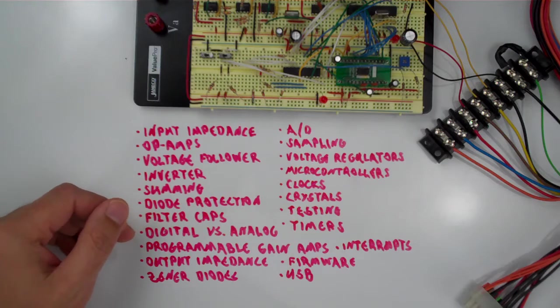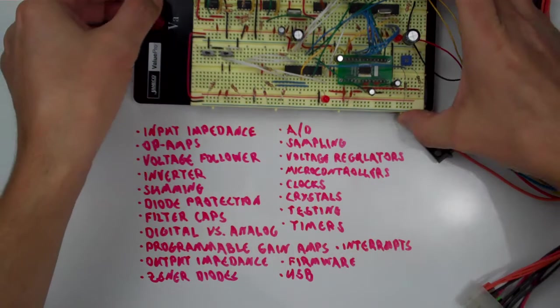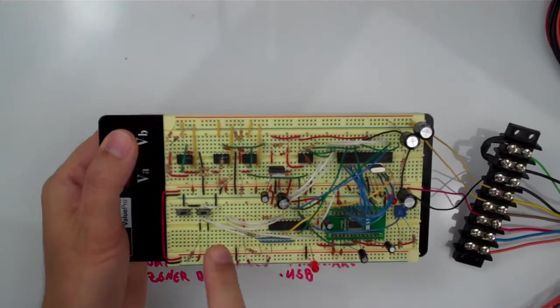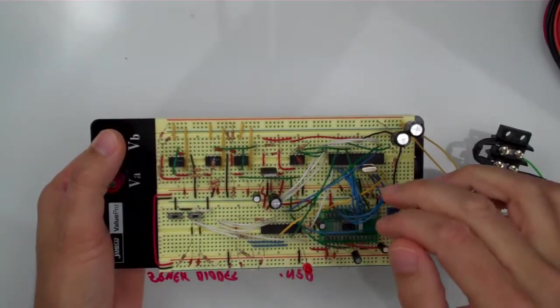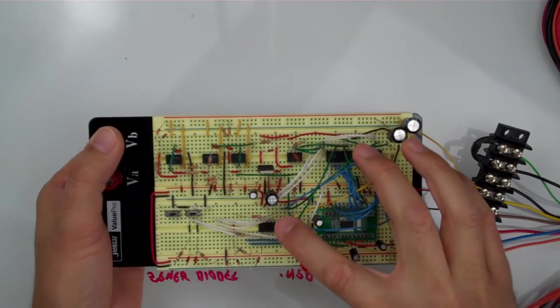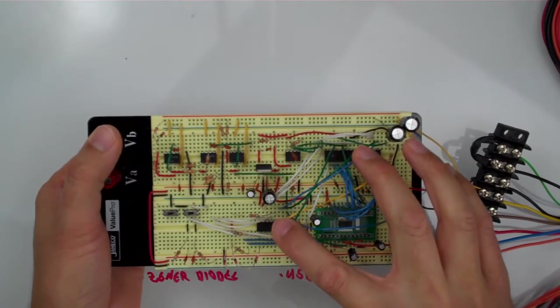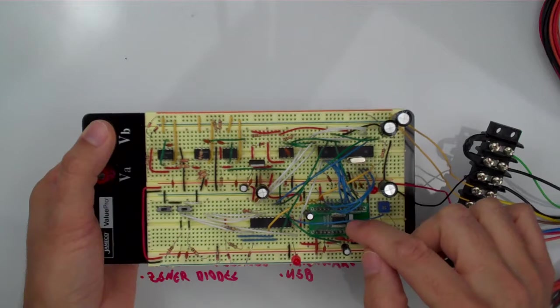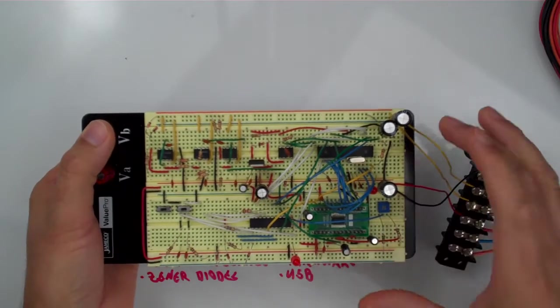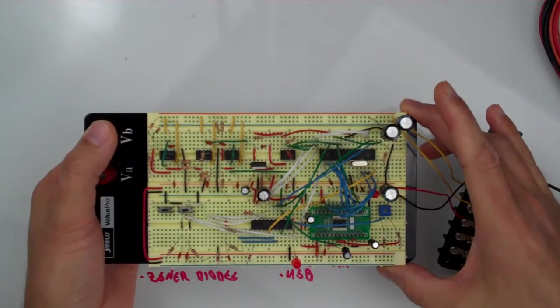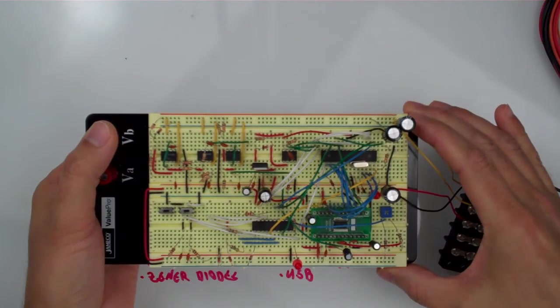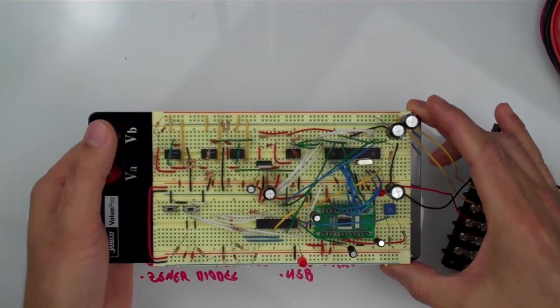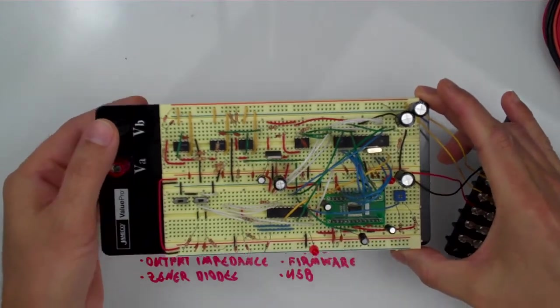You're going to learn all about digital versus analog. This circuit actually has the first part of the circuit is entirely analog. And then we have the microcontrollers that are primarily digital. But then we've also got the analog to digital converter, which is a mixture of both. So you're really going to get a very first-hand, very practical experience to working with both analog and digital circuitry in this one project.